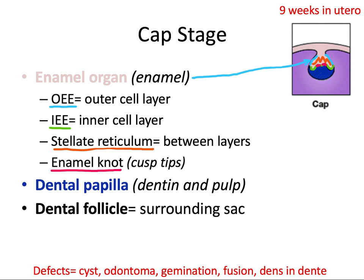The condensed mesenchyme we were talking about before aggregates and now forms its own entity called the dental papilla. Essentially the dental papilla is now wearing the enamel organ as a sort of cap. The dental papilla will ultimately create and become the dentin and the pulp. The dental follicle is the sac that surrounds the enamel organ and the dental papilla — you can think of it like a black outline that encircles the entire enamel organ and underlying dental papilla.